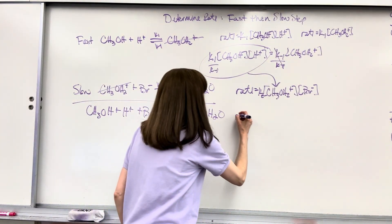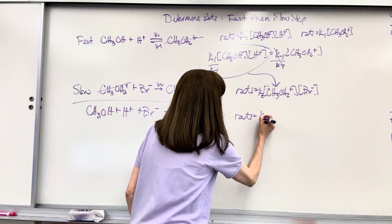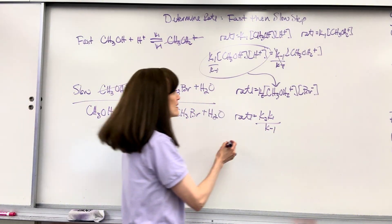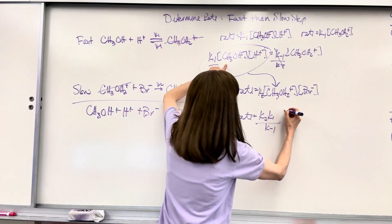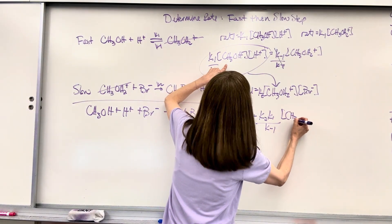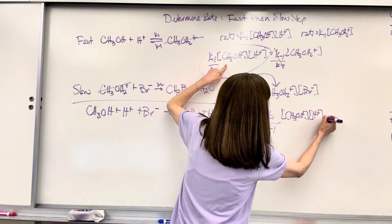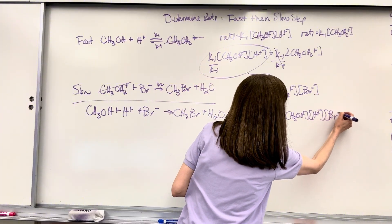Let's write the whole thing. Rate equals K2 times K1 divided by K-1 times CH3OH times H+ times Br-.